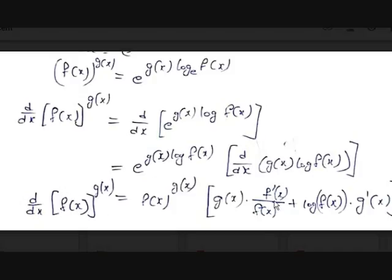So the derivative of f(x)^g(x) is f(x)^g(x) times [g(x)·f'(x)/f(x) + log f(x)·g'(x)]. You can't simplify this any further. From this formula, you can solve many problems like (cos x)^(sin x). Try different interesting problems on your own. Now let's look at higher order derivatives.